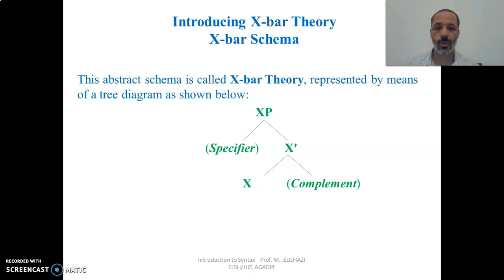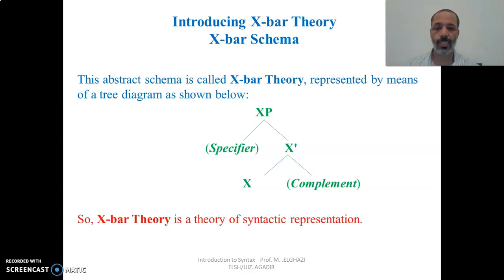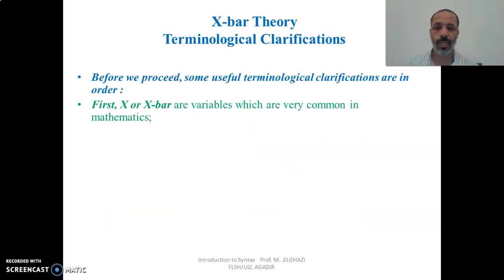The X-bar and a specifier — specifier refers to determiners also — together project into an XP, which represents a maximal projection referring to phrasal categories. So X is a word-level category, XP is a phrase-level category, and X-bar is an intermediate-level category. X-bar theory is a theory of syntactic representation. Before we proceed, there are some terminological clarifications in order. X and X-bar are variables, which are very common in mathematics.